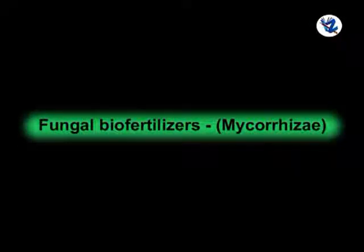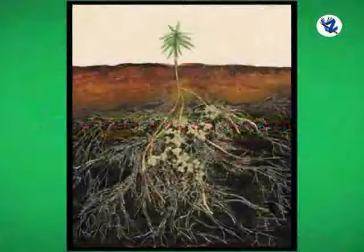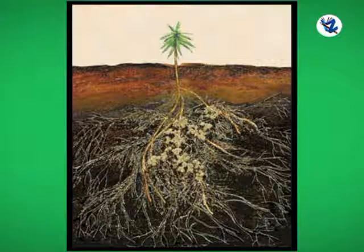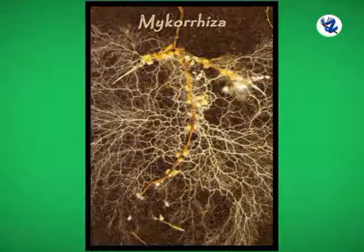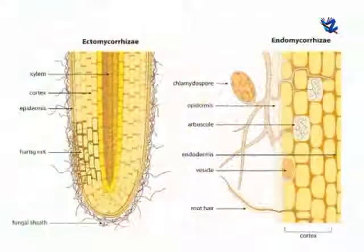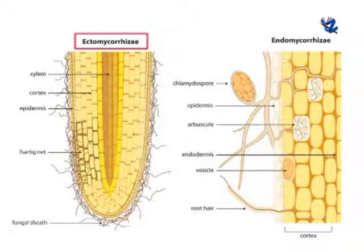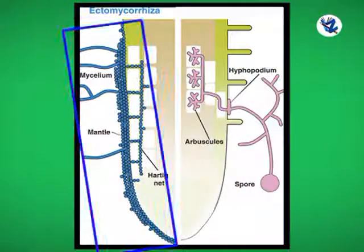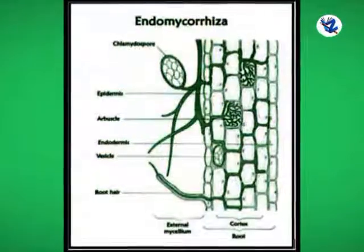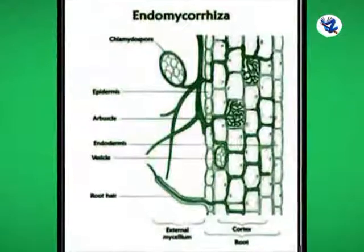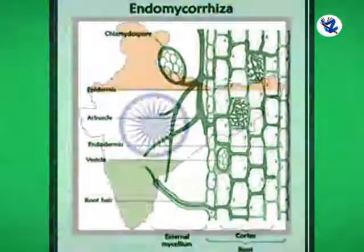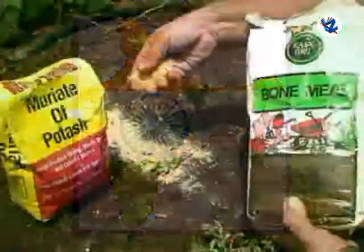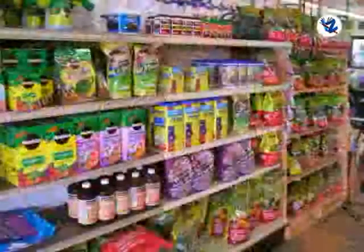Fungal bio-fertilizers — Mycorrhiza: mycorrhiza is a fungus that forms a symbiotic association with the roots of higher plants. There are two types: ectomycorrhiza and endomycorrhiza. Ectomycorrhiza increases the surface area of roots and accelerates water and nutrient uptake. Endomycorrhiza grows in between and within the cortical cells of roots. Many bio-fertilizers are available in the market in our country.